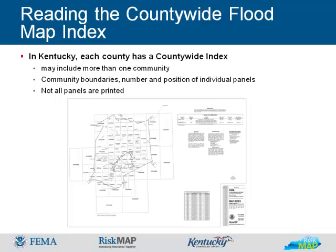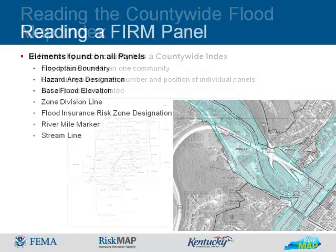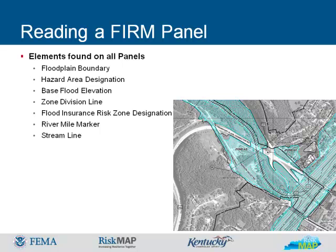County-wide flood map indices are available for all counties in Kentucky. The county-wide flood map displays the entire county and incorporated areas, and may include more than one community. The community boundaries are shown along with the numbers and position of individual panels. Several elements are found on all map panels, including floodplain boundaries showing the 1% and 0.2% annual chance floodplain. Dark tints indicate a greater flood hazard; light tints indicate a lesser flood hazard. Base flood elevations are shown as a line and label indicating the water surface elevation in relation to a standard set of geographic elevation, most often the North American Vertical Datum 1988. Zone division lines separate special flood hazard areas with different zone designations and differing base flood elevations. Flood insurance risk zone designations indicate the magnitude of flood hazard in specific areas. River mile markers identify the distance in miles from a reference point on a major watercourse, and stream lines identify the location of the watercourse.